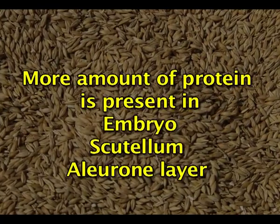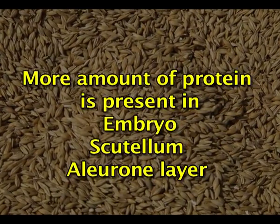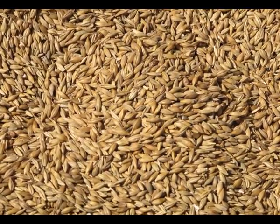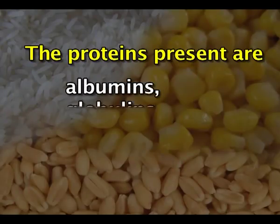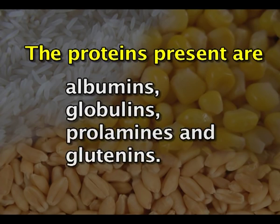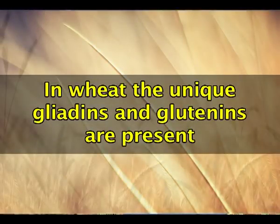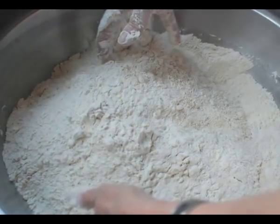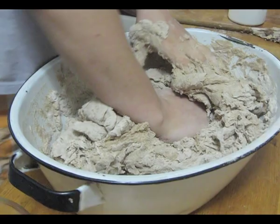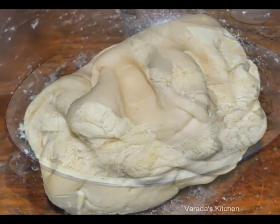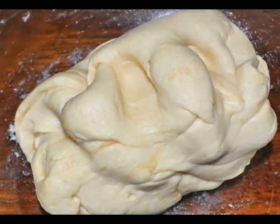More protein is present in the embryo, in the scutellum, and in the aleurone layer rather than in the endosperm, pericarp or testa. The proteins present in cereals are albumins, globulins, prolamins and glutelins. In wheat, the unique gliadins and glutelins are present. These two proteins combine to form gluten proteins when wheat flour is mixed with water to form a dough, giving a unique elasticity and flow property to wheat dough.